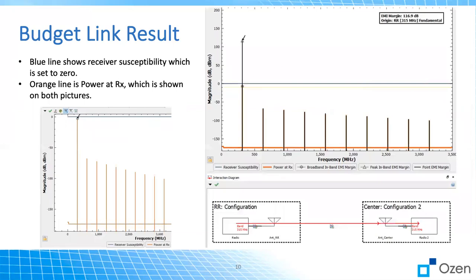Another way to present the result is that we have this power at the receiver, the receiver susceptibility and the peak EMI margin. As you can see, they are shown here with different colors. And here is the EMI margin is 116. It's almost the same as the previous result. And here is the power at different frequencies, if you are interested. But for this result, we are interested only in this frequency.